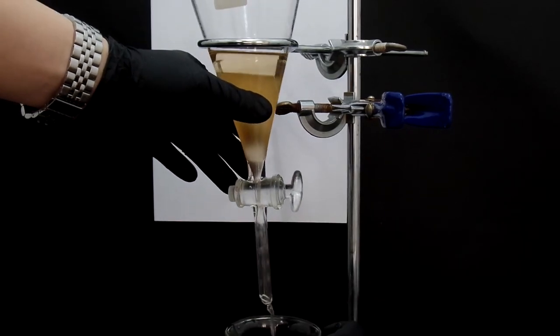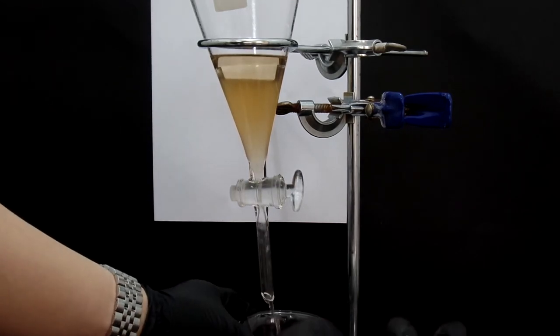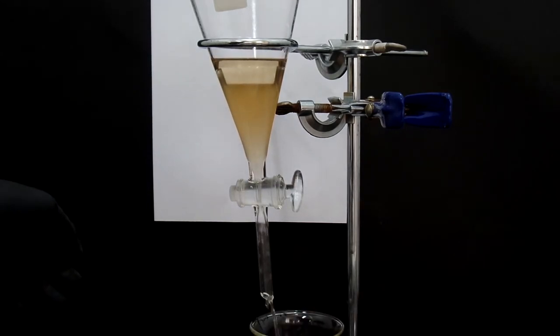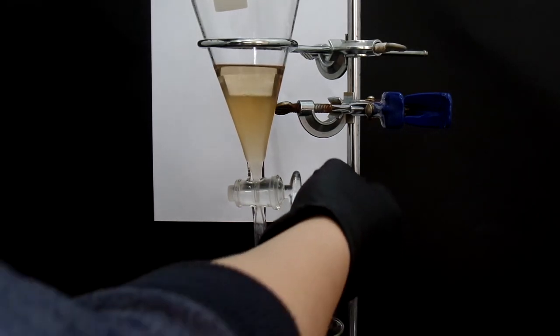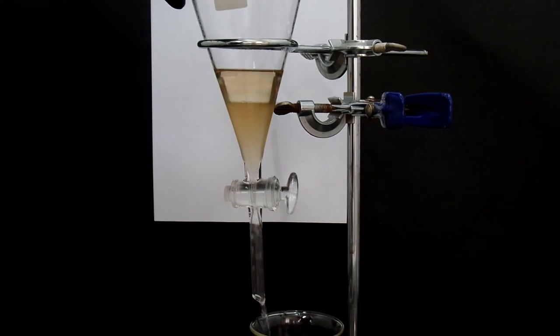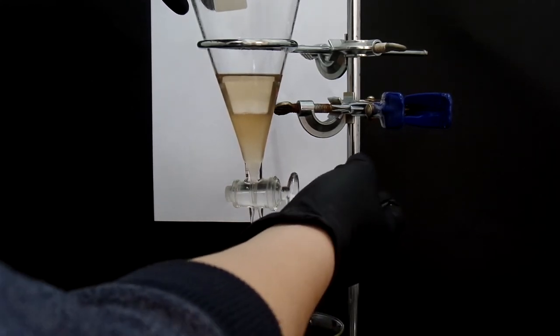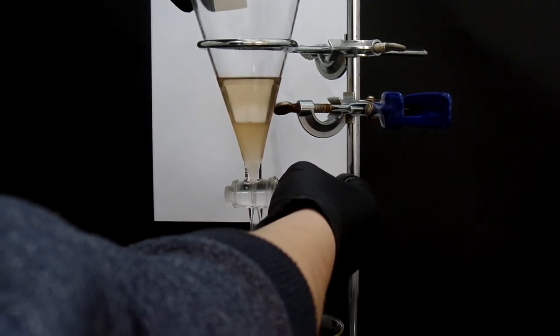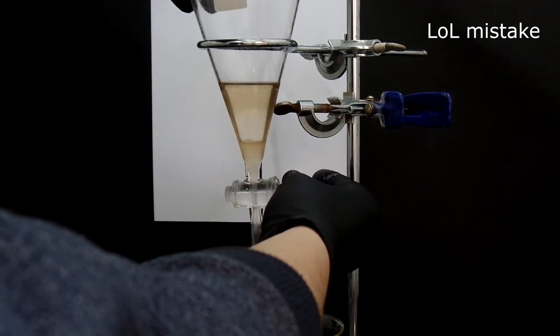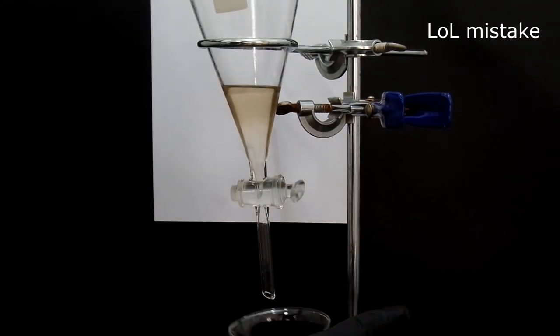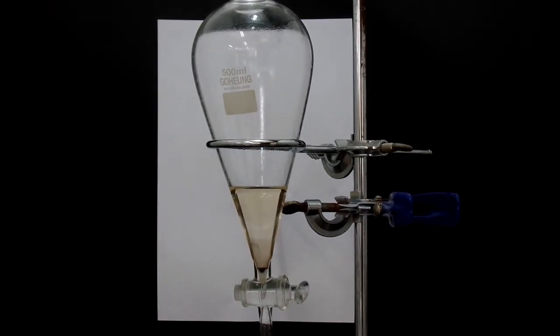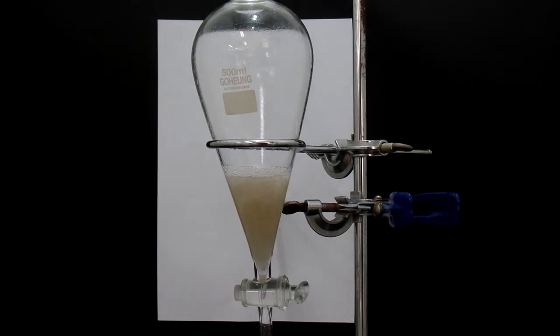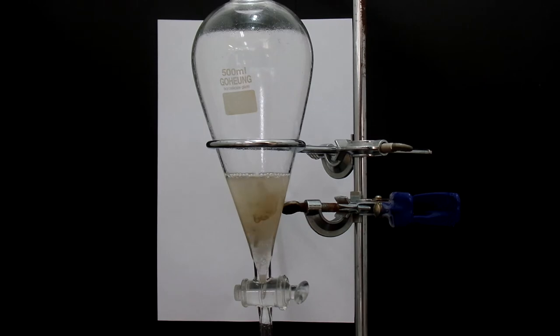After the layer is separated, the lower aqueous layer is discarded. Then add saturated sodium bicarbonate solution to neutralize remaining acid. This is important because you don't want your ester to smell like vinegar. Again, lower layer is discarded.